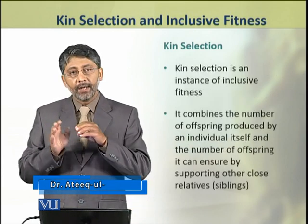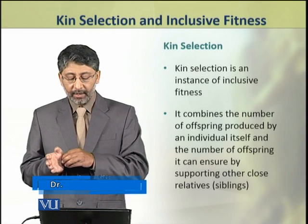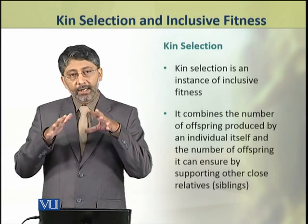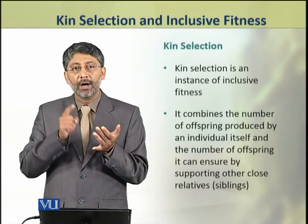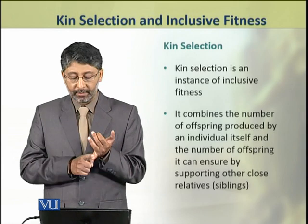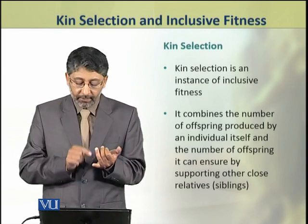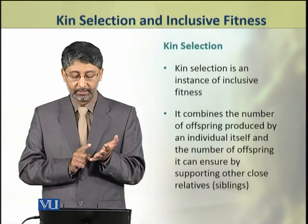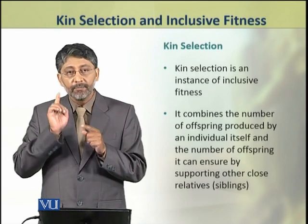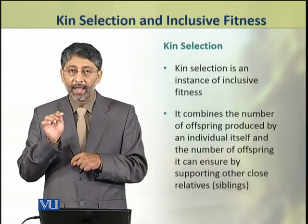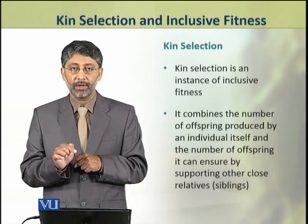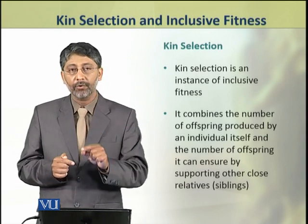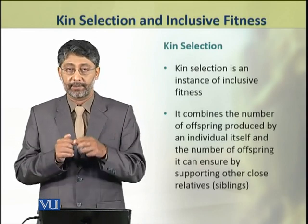Kin selection is an instance of inclusive fitness. It combines the number of offspring produced by an individual himself and the number of offspring it can ensure by supporting other close relatives or siblings.